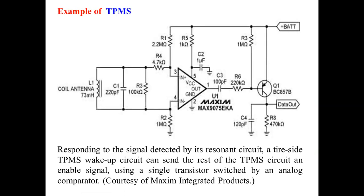The circuit diagram, taken from Maxim Integrated products, shows a coil from the antenna connected to a capacitor leading to the TPMS circuit. Various resistor values are present — 2.2 MΩ, 4.7 kΩ, 1 kΩ, 100 kΩ — along with a transistor gate with gate-in and gate-out, various capacitors, all powered by the battery to operate the TPMS electrical system.